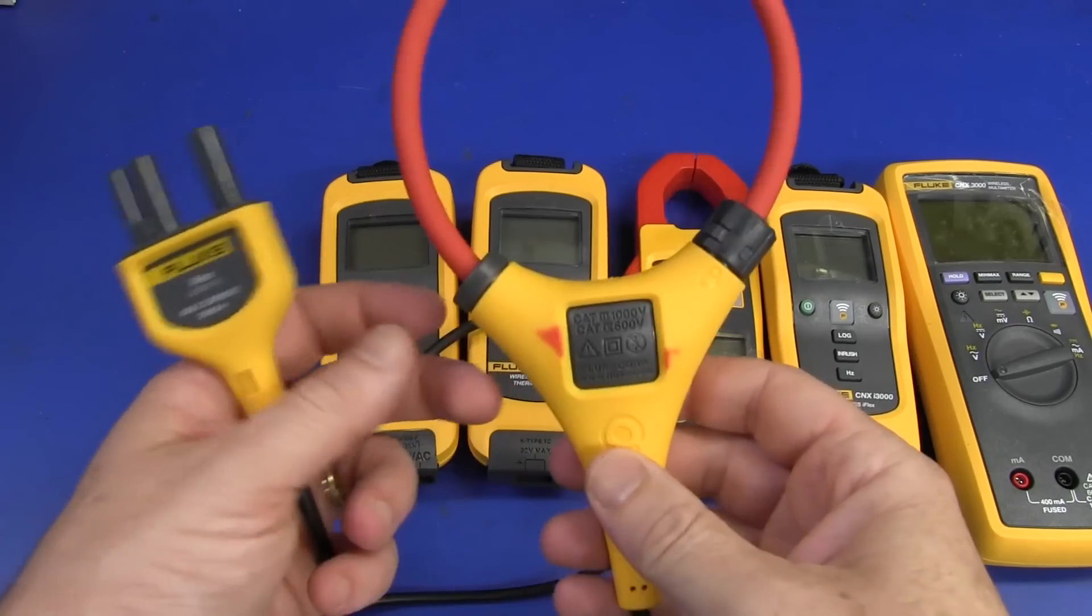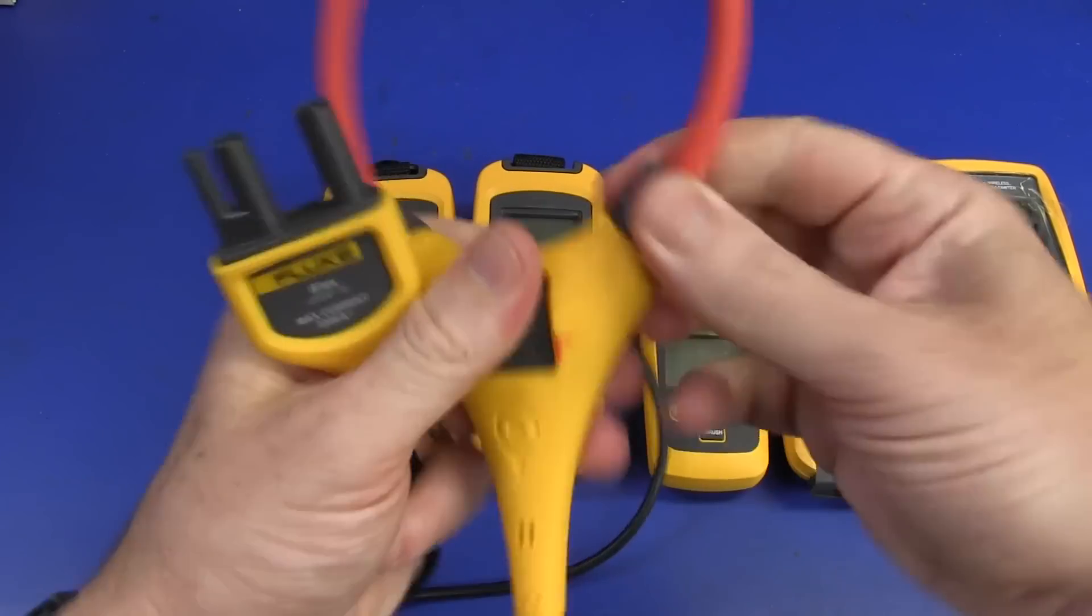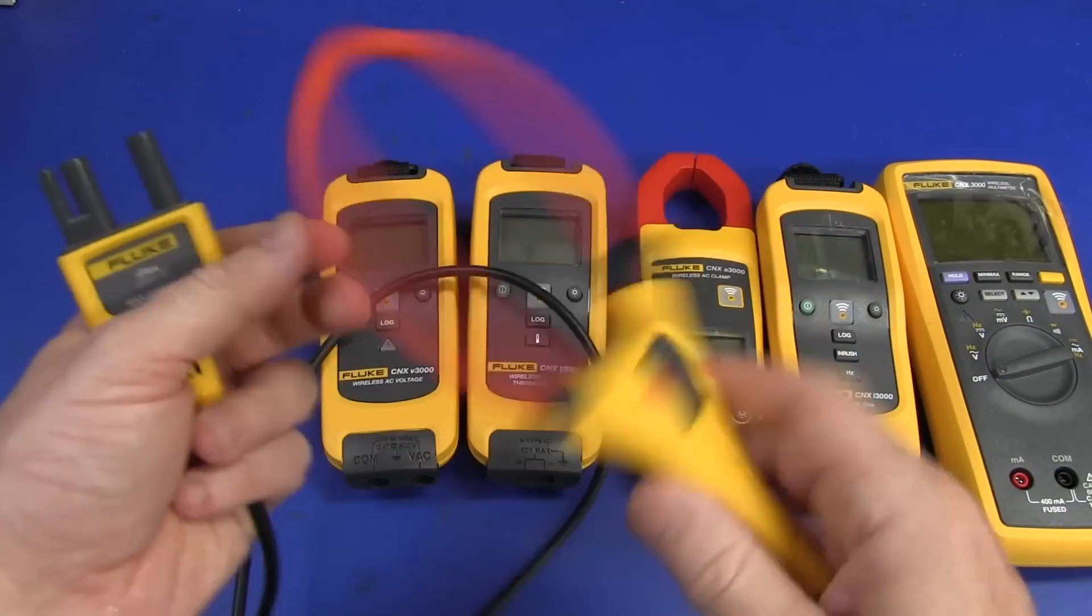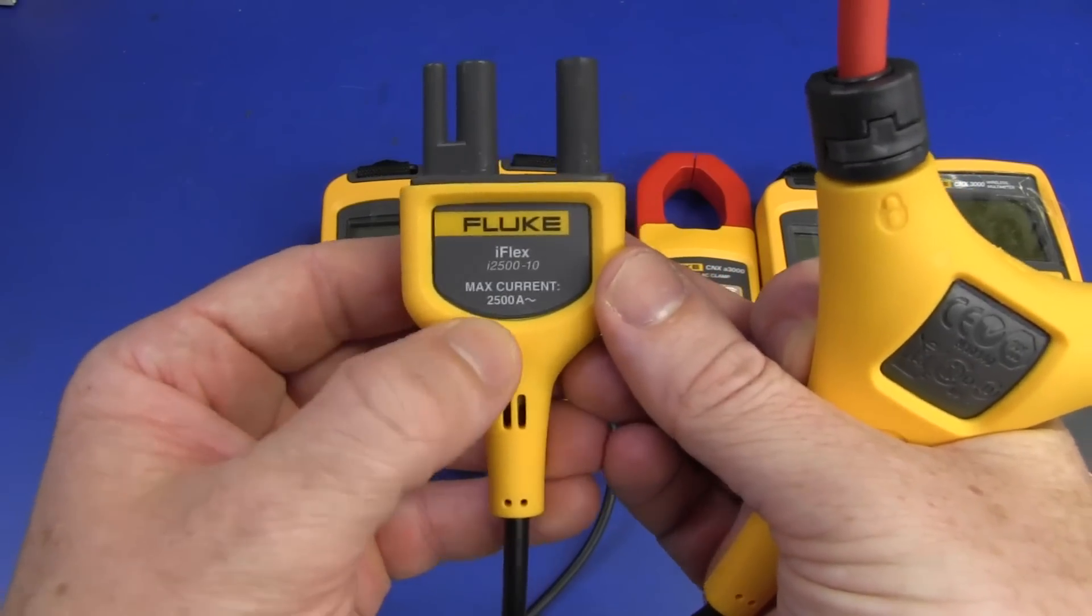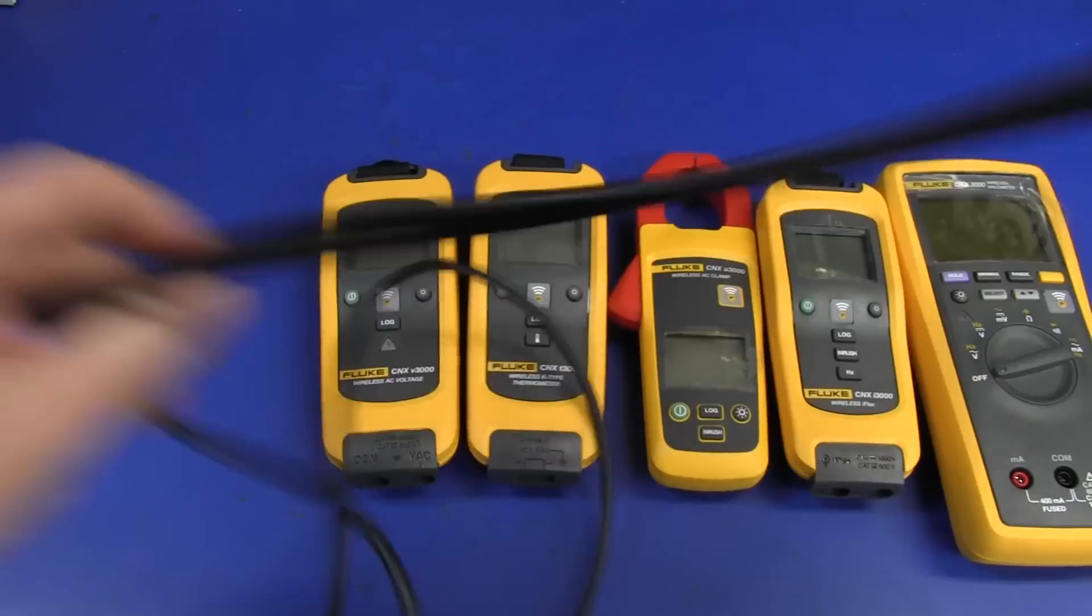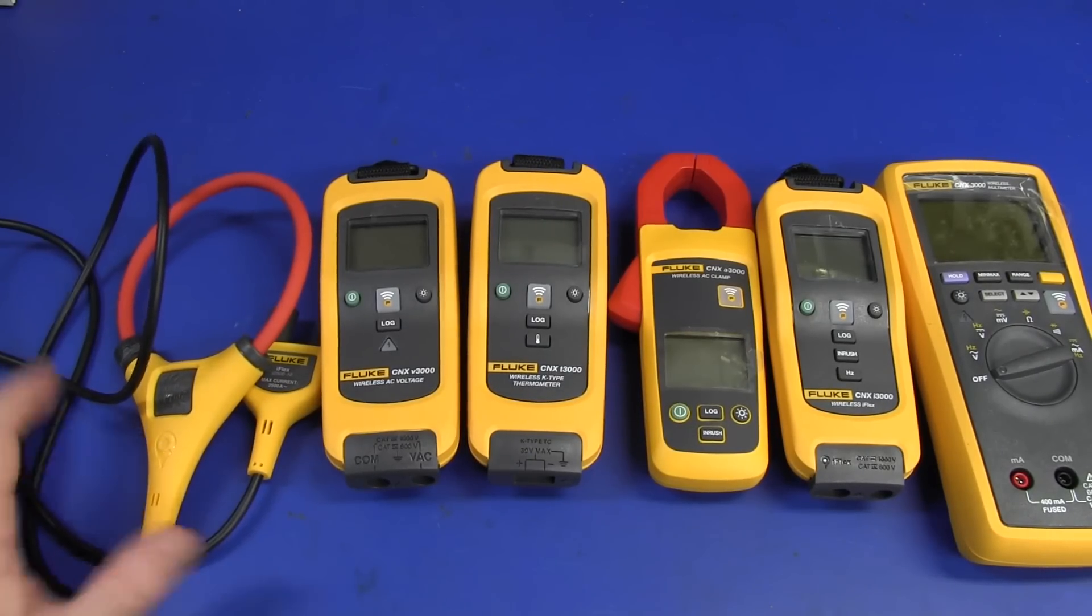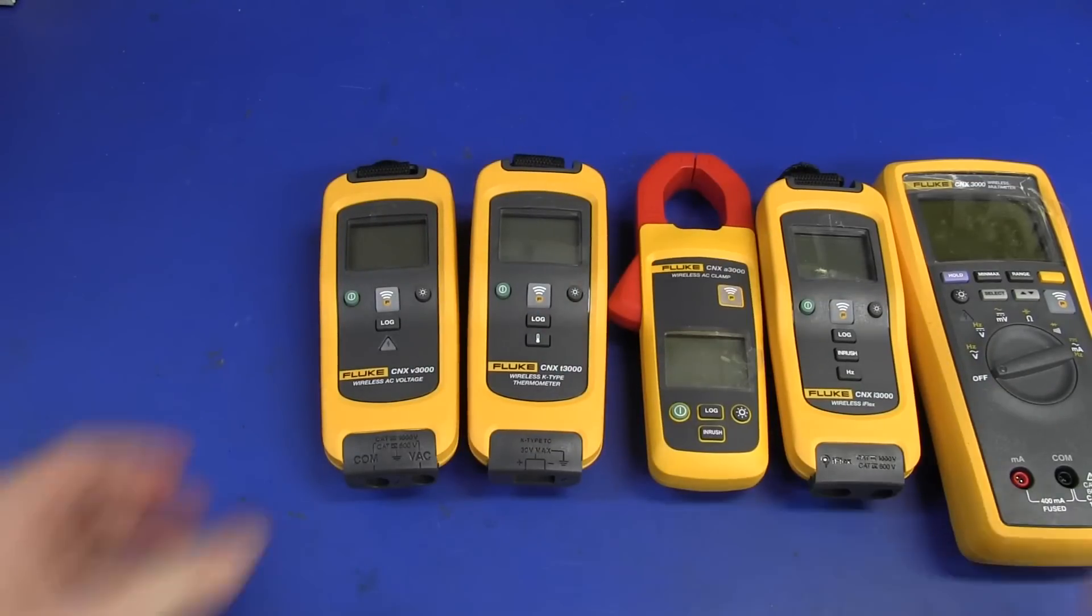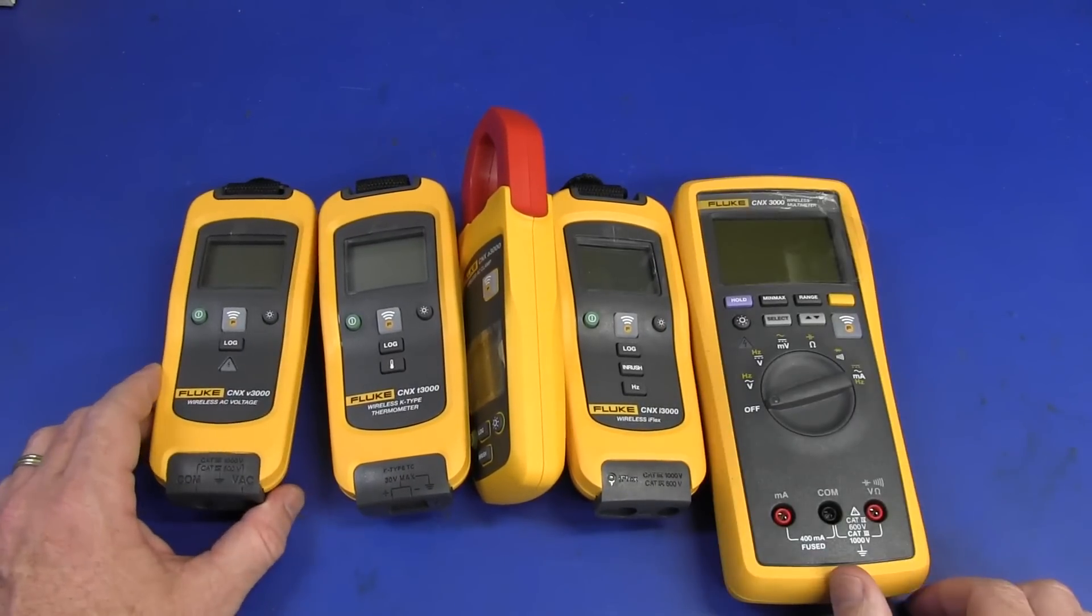And we've got all the bits and bobs as well, including this flexible current clamp. Just pops out like that, goes in there, you lock it, and that's actually a current clamp up to 2500 amps. So we're going to attempt to tear down these and see what we've got. A new Fluke. Beauty.